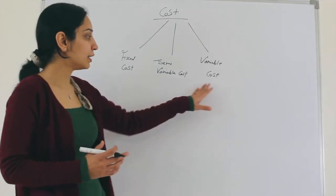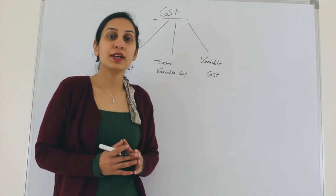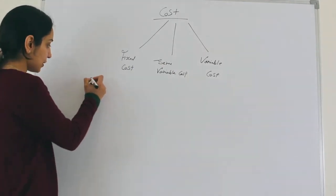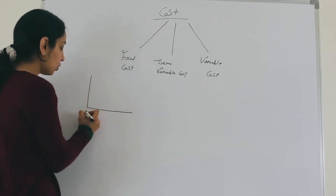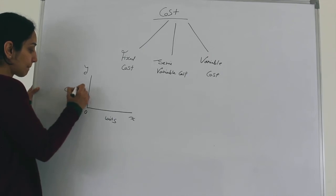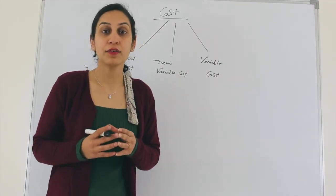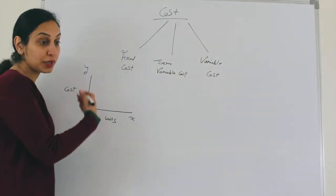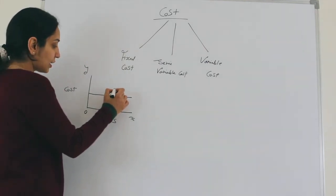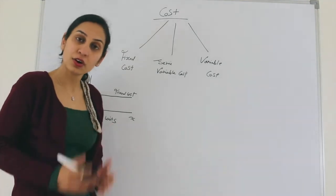It is very important to understand these three concepts if we want to understand what costing is all about. Now, let's make a graph of these three and see how they look. Let's make a graph for fixed cost first. On the X-axis we are putting units, and on the Y-axis we are putting cost. Fixed cost remains fixed and does not get impacted by level of activity, so when you make 1 unit the cost is the same as when you make 100 units. That means the line has to be parallel to the X-axis — that is the fixed cost line.